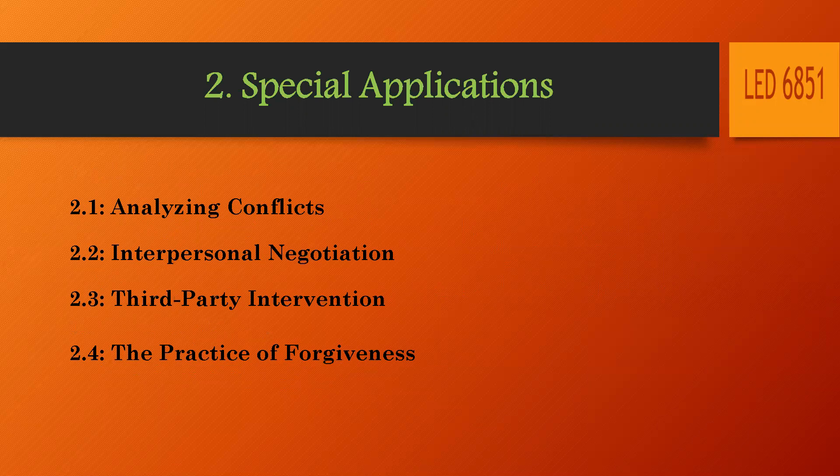Third-party interventions — your mom, your colleague, your father, your friend, your wife, your husband, your children maybe. They are the third-party intervention. And the practice of forgiveness and the role of memory in forgiveness. As they say, forgive and forget. Forgetfulness is part of the memory issues in forgiveness.